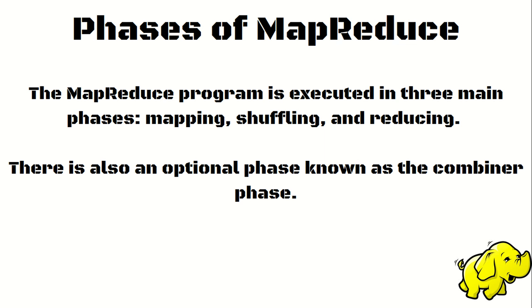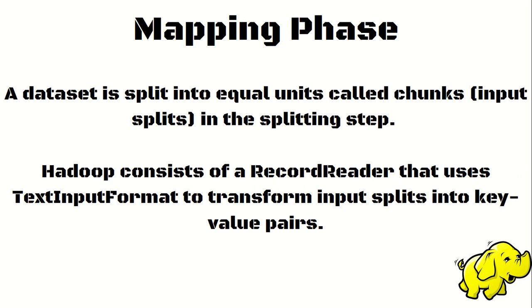The MapReduce program executes in different phases. The main phases are Mapping, Shuffling, and Reducing, and there is also a Combiner phase. Mapping is where data is split and custom logic is applied. Shuffling is where data is transported from mapper to reducer. Reducing performs the final aggregation. The Combiner is called a mini-reducer — it plays the same role as the reducer but at a local level.